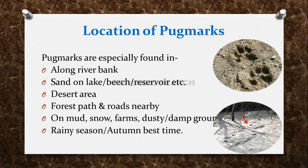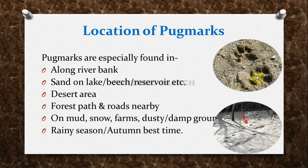Basically, the rainy season or autumn is the best season to find Pugmarks. Because in the rainy season, the soil becomes wet and mud forms, and on top of that mud, prominent Pugmarks become visible. That is why the rainy season and autumn are the best times for the collection of Pugmarks.